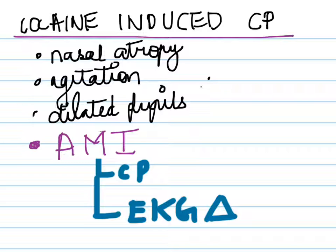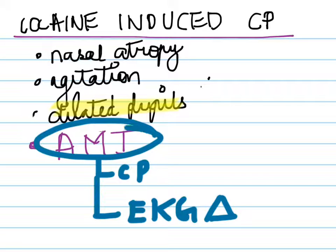The person who is intoxicated with cocaine will have nasal atrophy, because most of them are snorting cocaine to the point that they get agitated. They will present with dilated pupils on eye exam, and obviously chest pain, which is caused because of acute myocardial infarction induced by cocaine itself. You will see EKG changes.